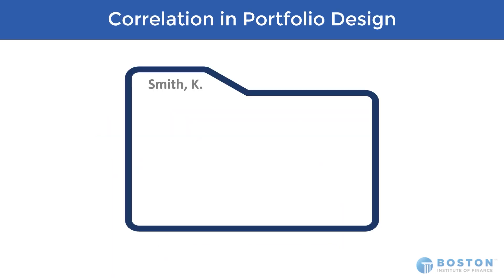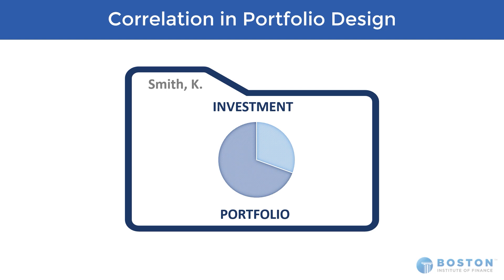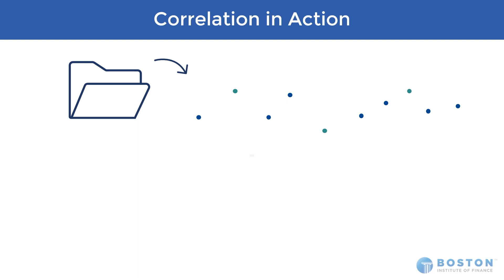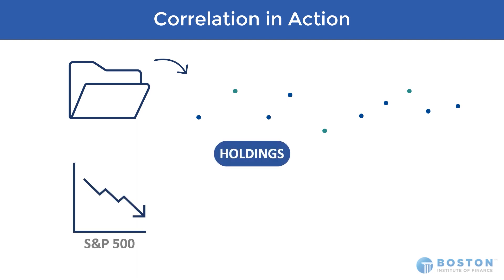Now let's take a look at how we can use correlation in building a portfolio. Suppose within an investment portfolio there are several holdings, each with a different correlation in relation to one another. If the S&P 500 trends down, assets with a high positive correlation will trend downwards with it, whereas assets with a negative correlation will increase in value in response to the S&P 500 declining. By making sure there's a variety of correlations between holdings within a portfolio, balance may be achieved in a variety of market conditions.